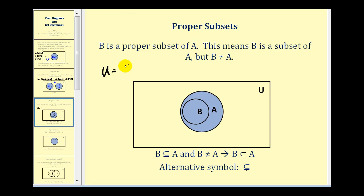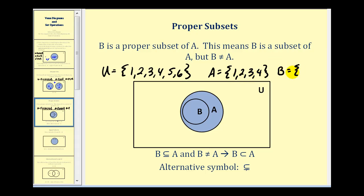So we let the universal set contain the elements one, two, three, four, five, six, and let's say set A contains one, two, three, and four. Set B would have to contain some of the elements in set A but not all of them because they're not equal, so maybe set B would contain one and two. We'd have the elements one and two inside B that are also inside set A. Three and four would be outside set B but inside set A, and then five and six would still be in the universal set.